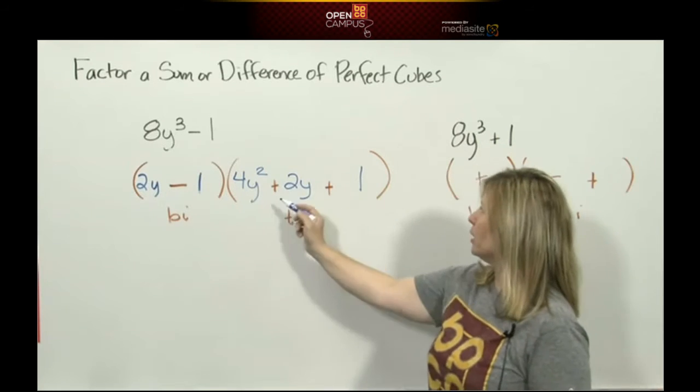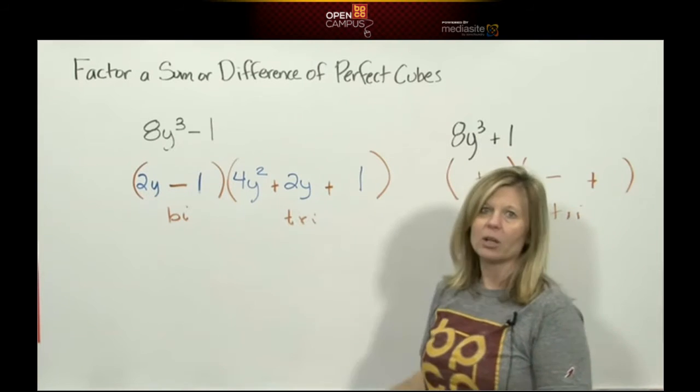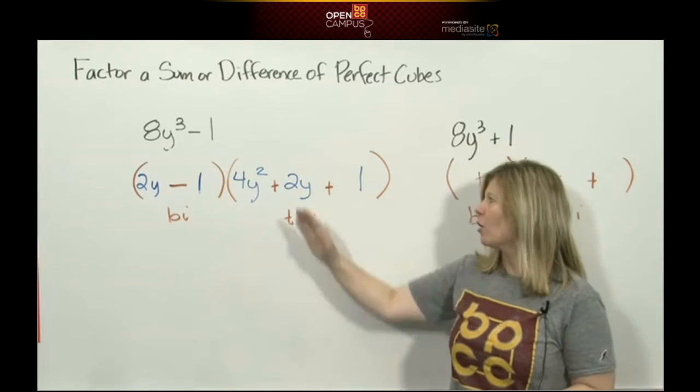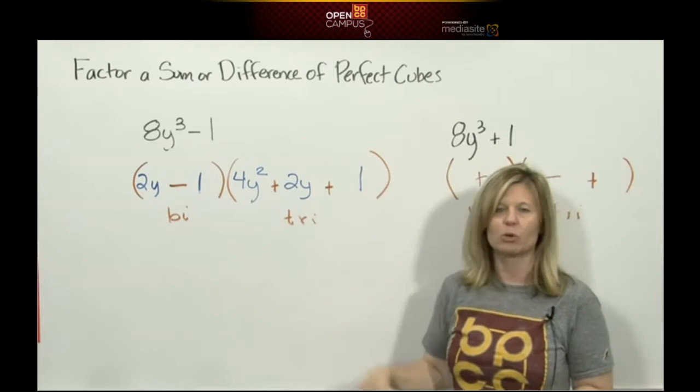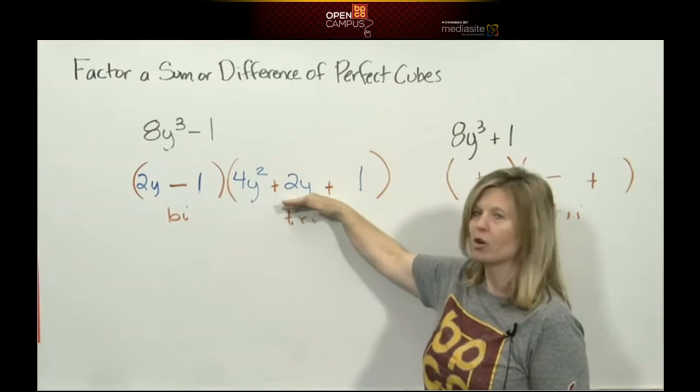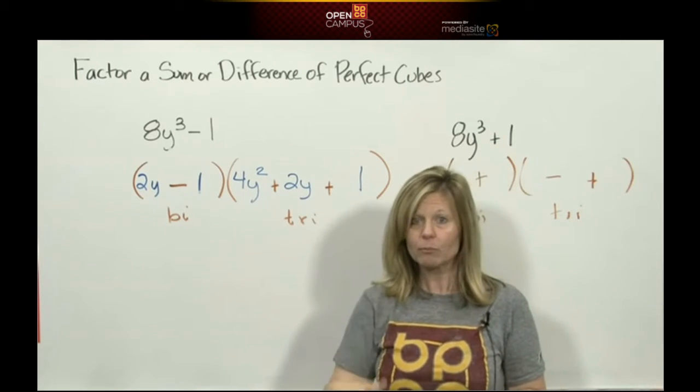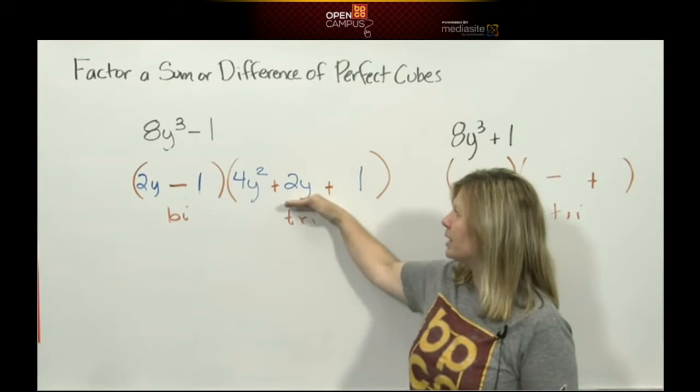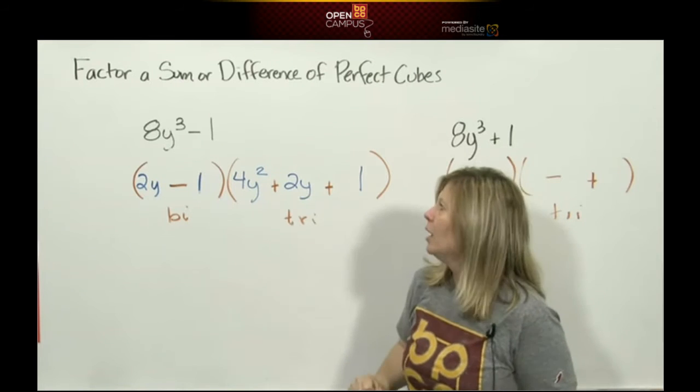Okay? Now everybody look at this trinomial. It is a trinomial. Is it easy or difficult? This one's difficult. It has a 4 in front. We could be here all day trying to factor this with trial and error or do AC. I will tell you right now, this trinomial will never factor. When you do the rule, sum or difference of perfect cubes, the trinomial you get will never factor.